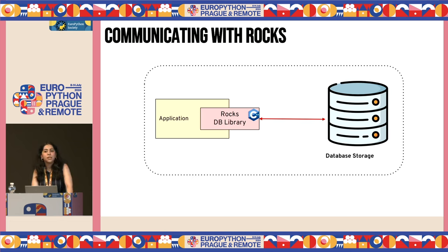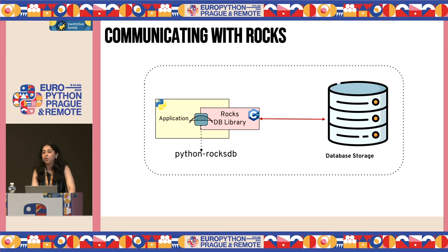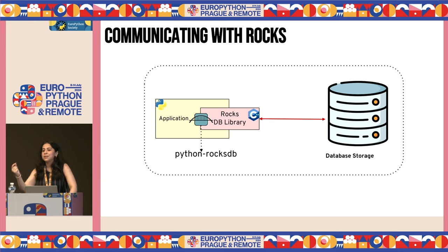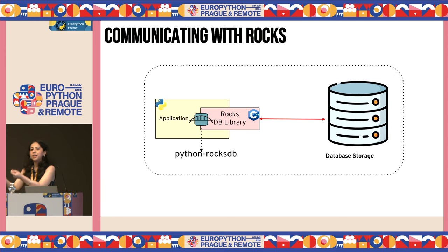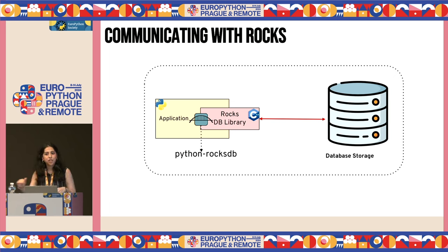For your Python applications to talk to RocksDB, you need something called the Python RocksDB package. In very simple terms, this allows your application to speak the language that RocksDB's C++ core understands — it's like a translator. When you put something or take something out of the database using a Python command, it's the Python RocksDB package that's handling this communication under the hood.